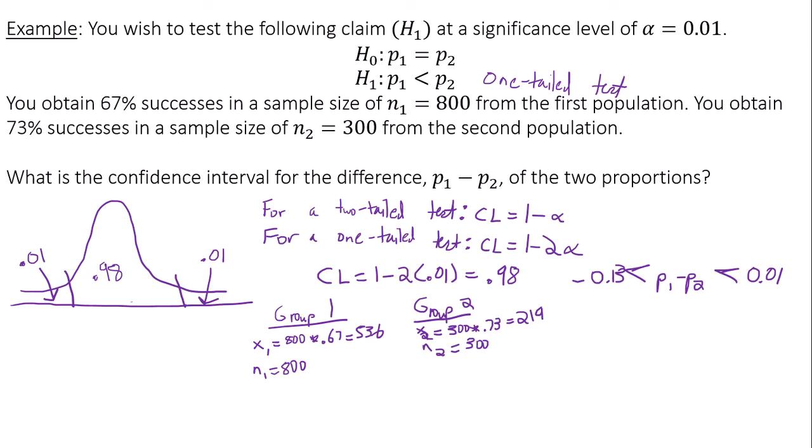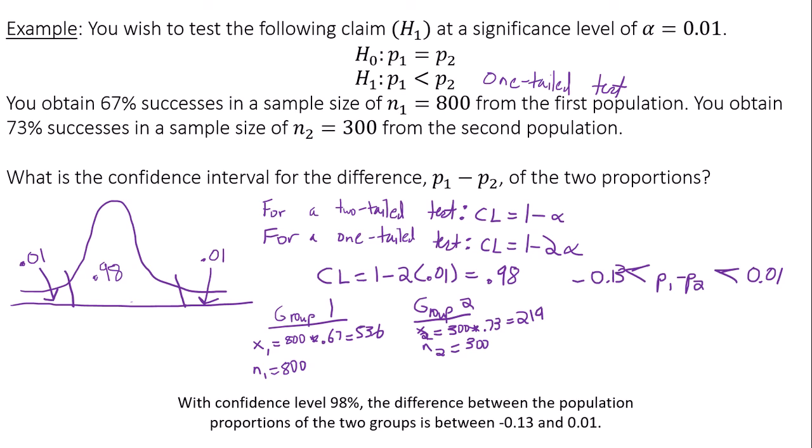So what does this mean? Well, it means that with confidence level 98%, the difference between the population proportions of the two groups is between negative 0.13 and 0.01.